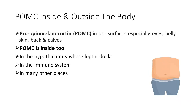What I'm going to talk about today is pro-opiomelanocortin or POMC. This is found in our surfaces but also on our insides — there's lots of POMC in the eyes, on the front of the belly, the skin, our backs and our calves, but also inside in the hypothalamus where the hormone leptin docks.